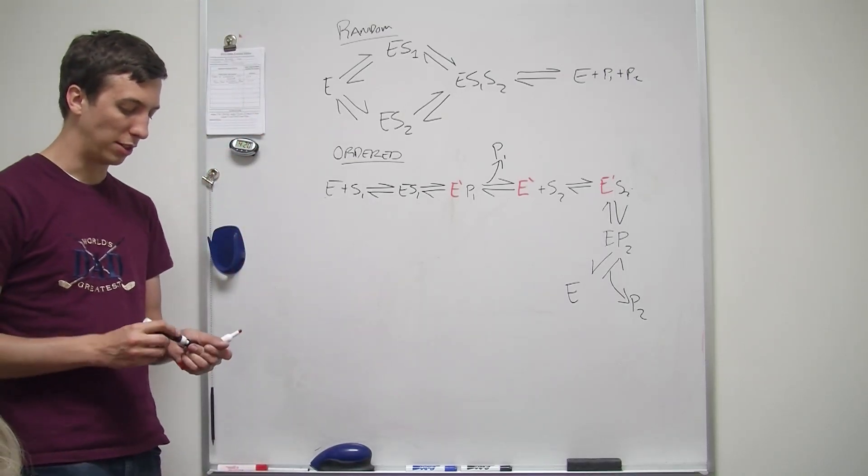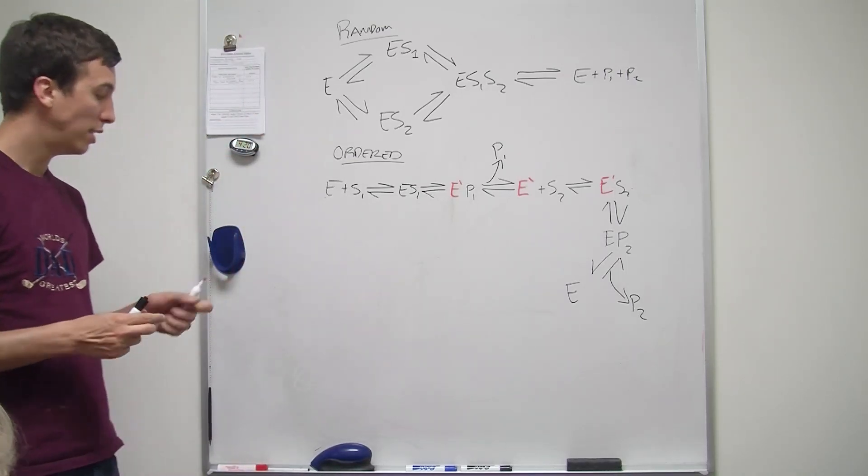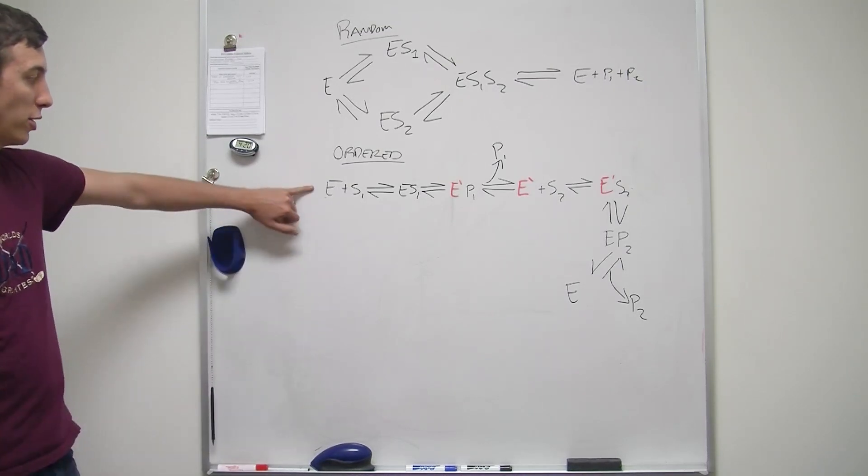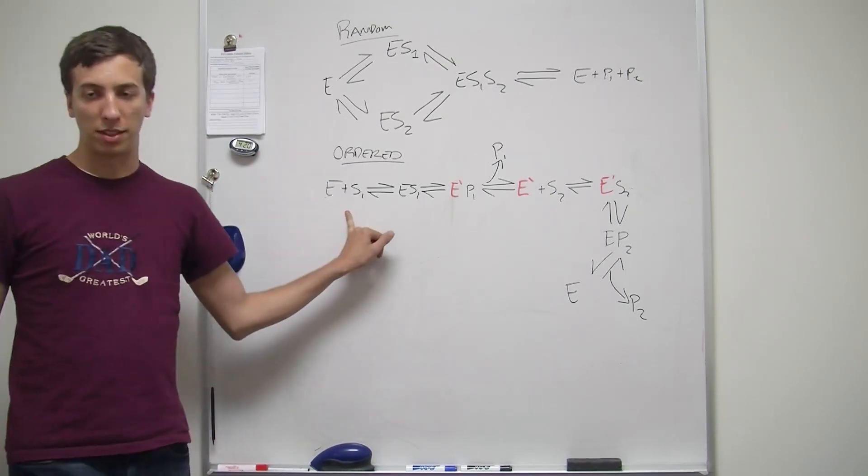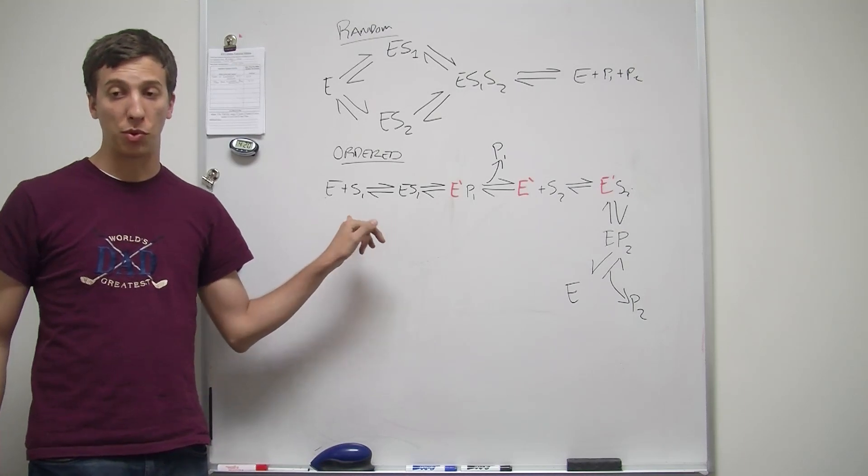Okay, so what we've got going here is what's known as ordered. Now at the very beginning we have just a regular enzyme and it binds with substrate one. It has to bind with substrate one first.